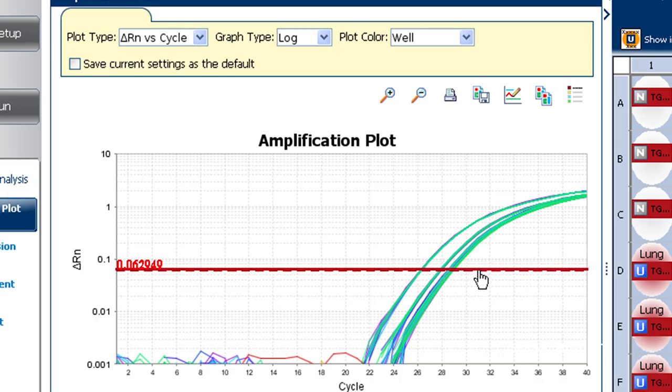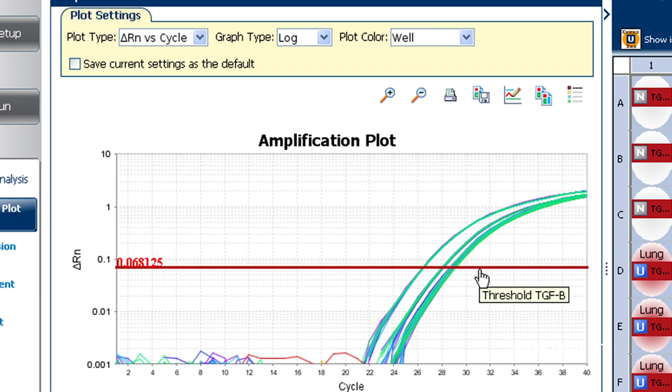A happy spot? Some place where all of our curves are straight and parallel to one another. What we really want is to put the threshold wherever the precision of our replicates is highest. That's generally somewhere toward the middle of the geometric phase, or maybe slightly higher. In any case, with a really robust assay, hitting a good spot is quite easy.